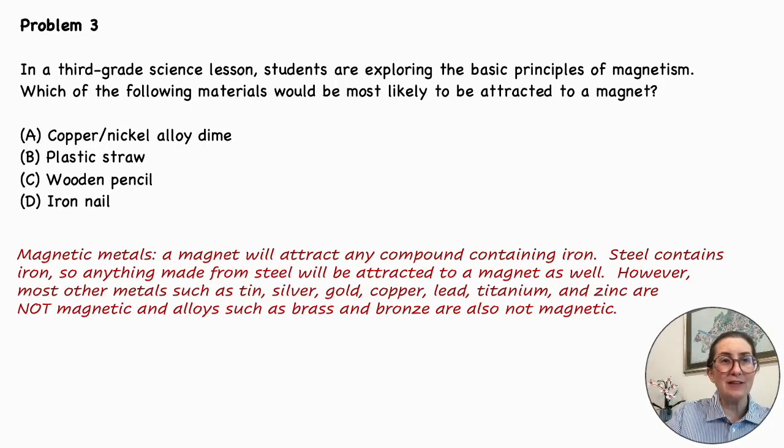Problem number three. In a third grade science lesson, students are exploring the basic principles of magnetism. Which of the following materials would be most likely to be attracted to a magnet? A. Copper nickel alloy dime. B. Plastic straw. C. Wooden pencil. Or D. Iron nail.